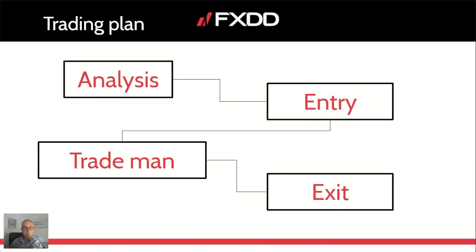Analysis is basically anything that allows you to understand if there's an entry — very simply said. Some people make a lot of analysis; some make it complicated; some make it very short. Even with rules-based systems, you're still analyzing whether the strategy has met all the rules. There could be very rules-based or very discretionary analysis.